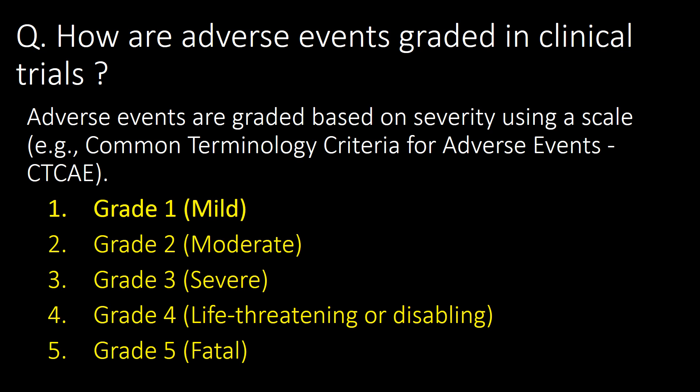How are adverse events graded in clinical trials? Adverse events are graded based on severity using a scale: Grade 1 for mild, Grade 2 for moderate, Grade 3 for severe, Grade 4 for life-threatening or disabling, and Grade 5 for fatal or causing death.